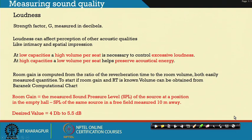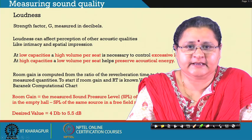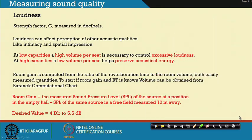The Baranac computational chart has been provided in the next slide, adapted from Baranac's graph. It is a helpful measure to start with the initial volume if you have a targeted gain — that is, room gain. Room gain is the measured sound pressure level of the source at a position in an empty hall minus the sound pressure level of the same source in a free field condition measured 10 meters away. The desired value is between 4 to 5.5 decibels.